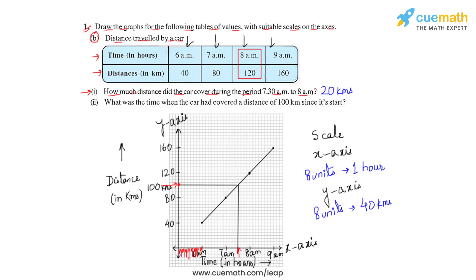To answer the second part of the question, where we need to find the time when the car had covered 100 kilometres since its start — we just saw that at 7:30 am the car covers 100 kilometres since its start. Let us now move on to the next tables of values.